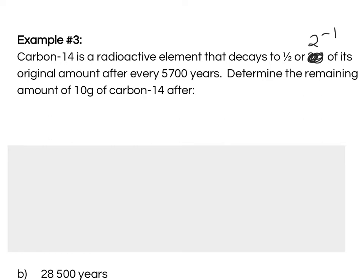So, let's read the question together. It says, carbon-14 is a radioactive element that decays to one-half or 2 to the power of negative 1 of its original amount after every 5,700 years. So, let's first look at this one-half and 2 to the power of negative 1. Why have I been able to say that? Well, I know that one-half is equal to 2 to the power of negative 1 if I'm looking to relate my negative exponent and rewrite it as a positive power. I know that those are equivalent ways of writing the same thing.